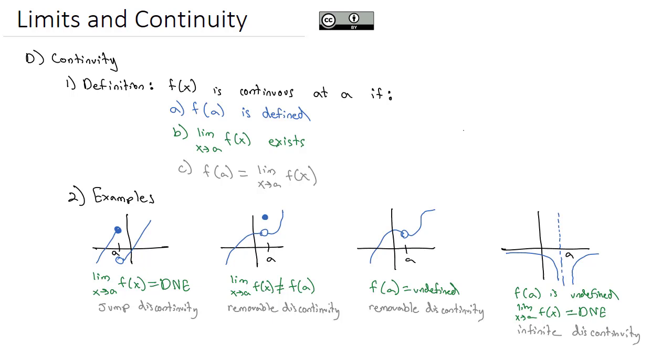In order to satisfy all three of the requirements, the graph should be able to be drawn smoothly without lifting your pencil. That is the only time we can say it is continuous.